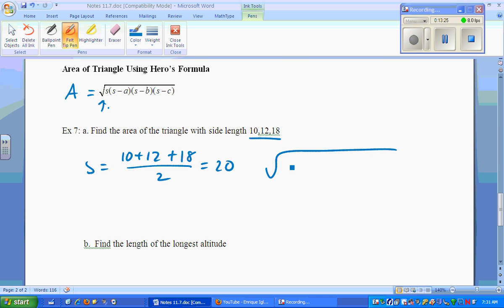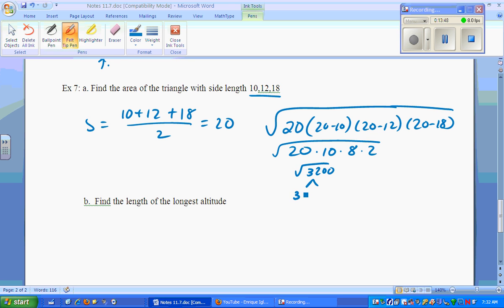Now we plug it into our formula. It says S. So that's 20. Times S minus, I don't care. 20 minus 10 times 20 minus 12 times 20 minus 18. So what do we got? We have 20 times 10 times 8 times 2. Square root it. Square root of 3200. And that breaks up into root 32 and root 100, which then breaks up into 10 root 32. But you could still break it up and you end up with 16 and 2. So you get 10 times 4 root 2, which is 40 root 2 for your unit squared for your area.